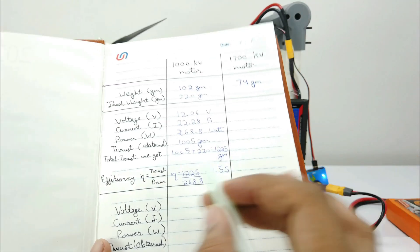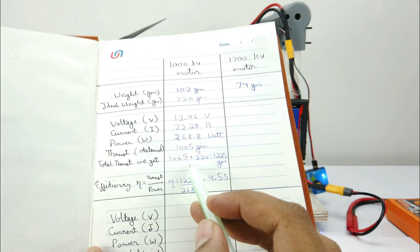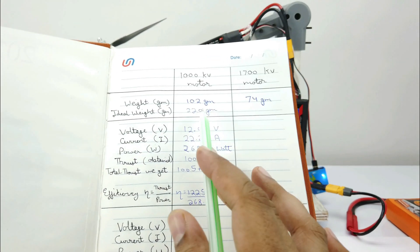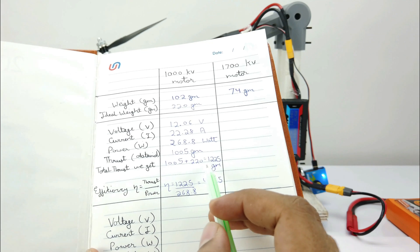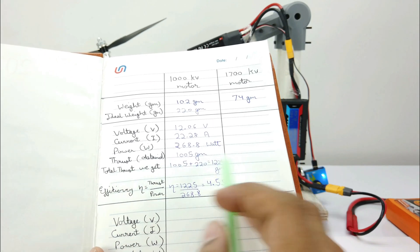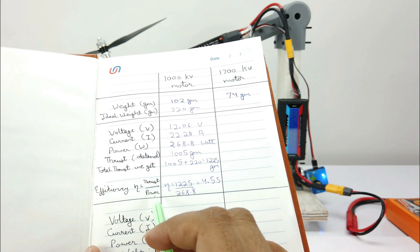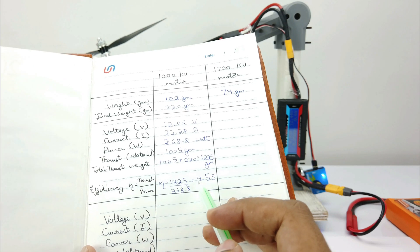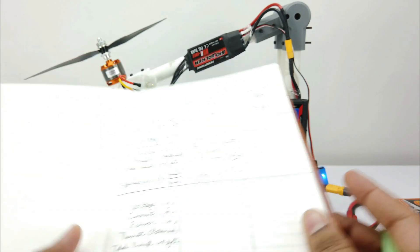So using this propeller we got a thrust of 1005 grams. And when we add the ideal weight of 220 grams we got 1225 grams of total thrust. And efficiency is thrust upon power and here we got the efficiency of 4.55 which is quite good for this motor.